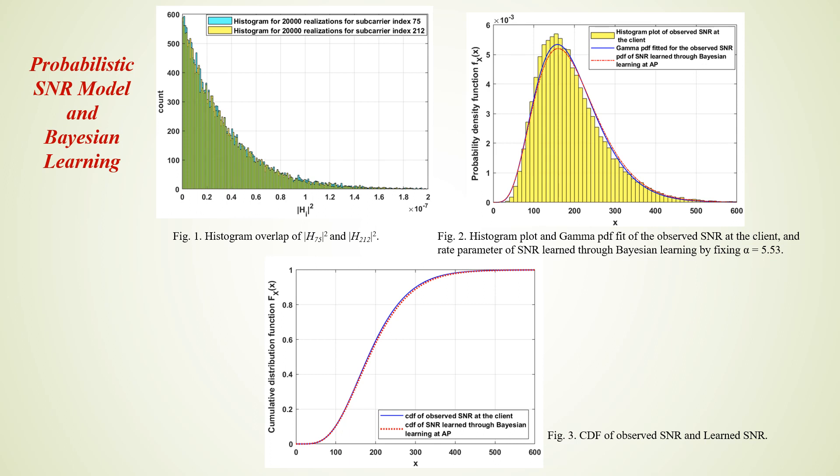We then wondered if the gamma distribution could be tuned to match the observed histograms by adjusting its parameters. Ideally, both the shape parameter and the rate parameter of the gamma distribution must be learned, but the literature indicates that learning both parameters is hard. The conjugate prior for the gamma rate parameter is known to be gamma distributed, but there exists no standard distribution that behaves as a prior for the shape parameter. So we decided to keep the shape parameter fixed and learn the rate parameter through Bayesian learning.